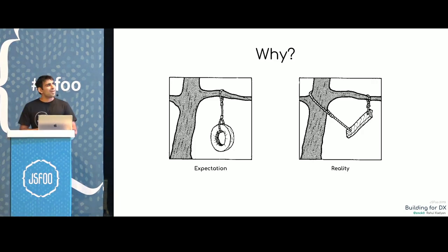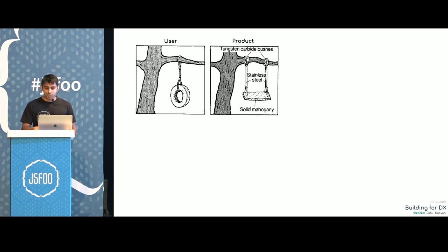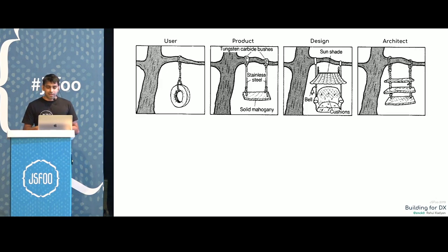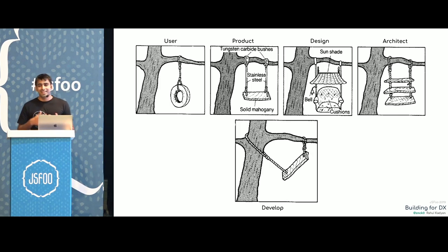Why are we so far from what the user actually wanted? There are different stakeholders involved in building experiences: the user who needs something, product who fulfills those needs, design who provides aesthetics and ease of use, and the architect who wants the project to live long and grow with requirements. All those people combine everything and put it on the poor development team, and they somehow build something.